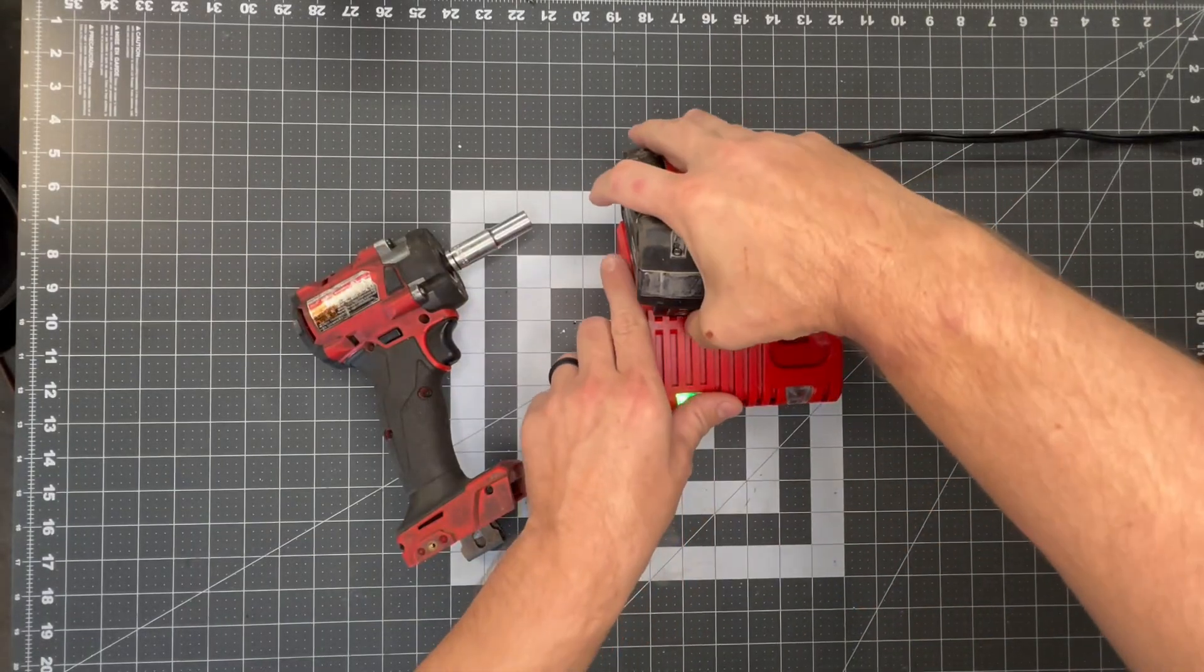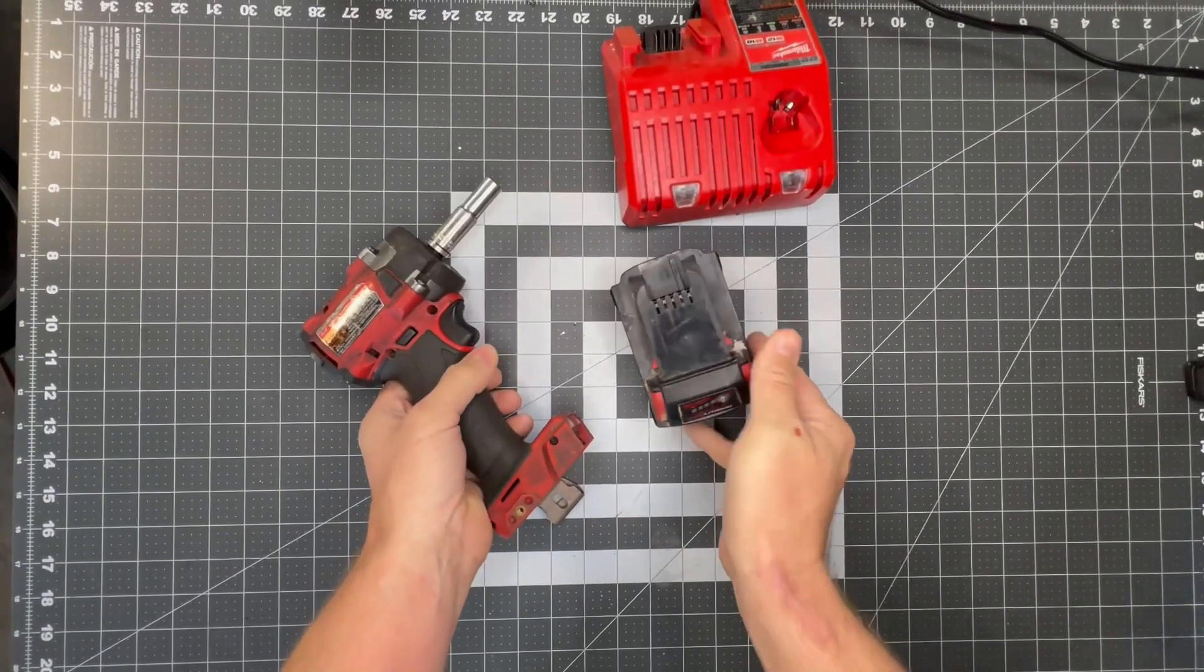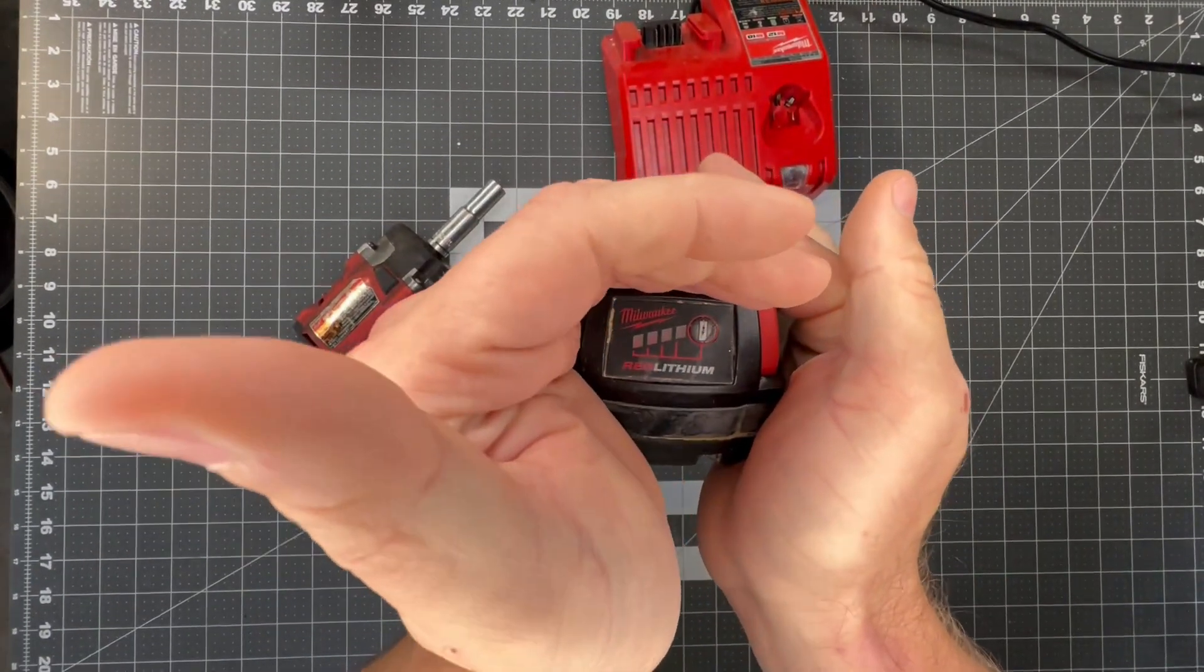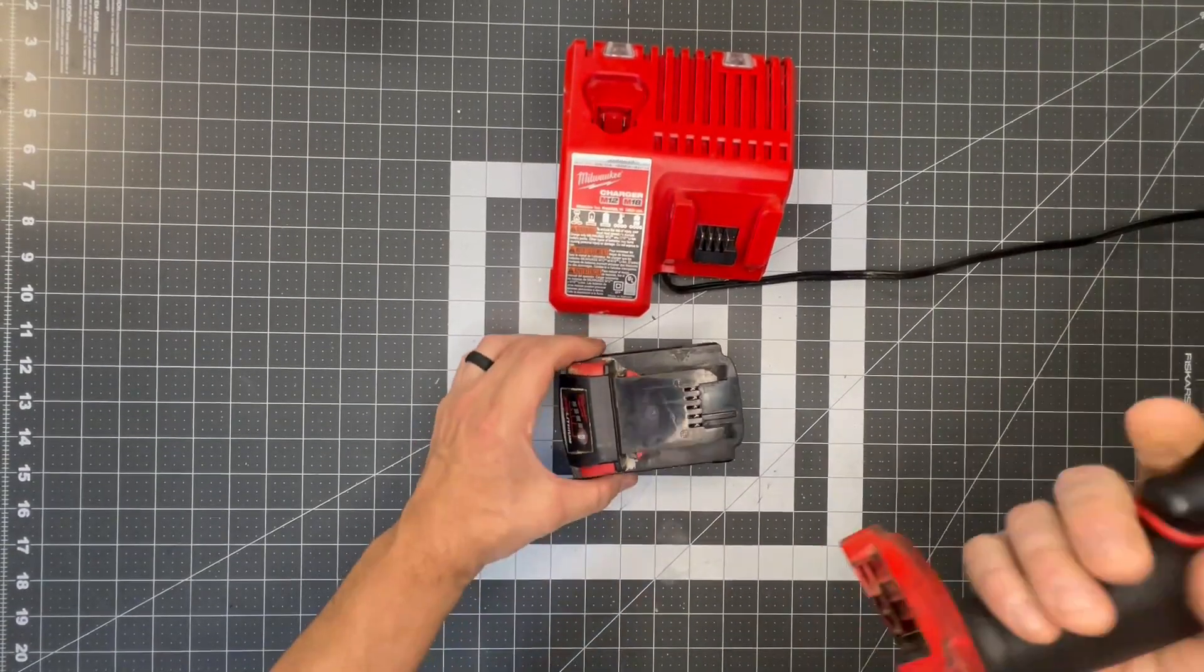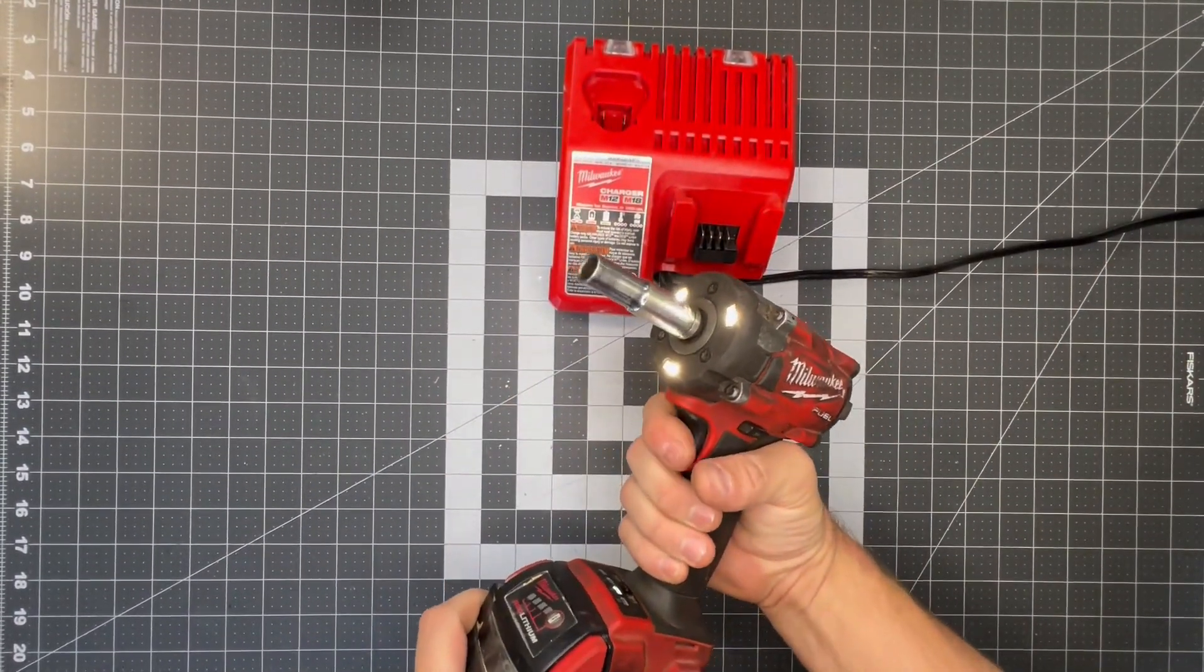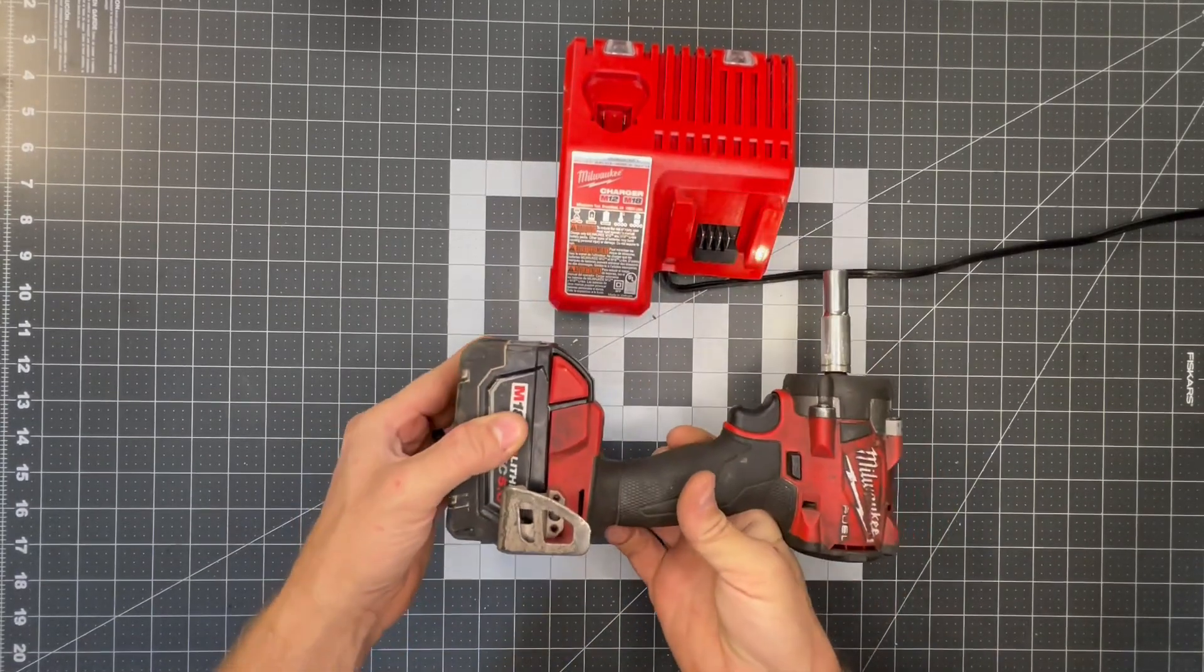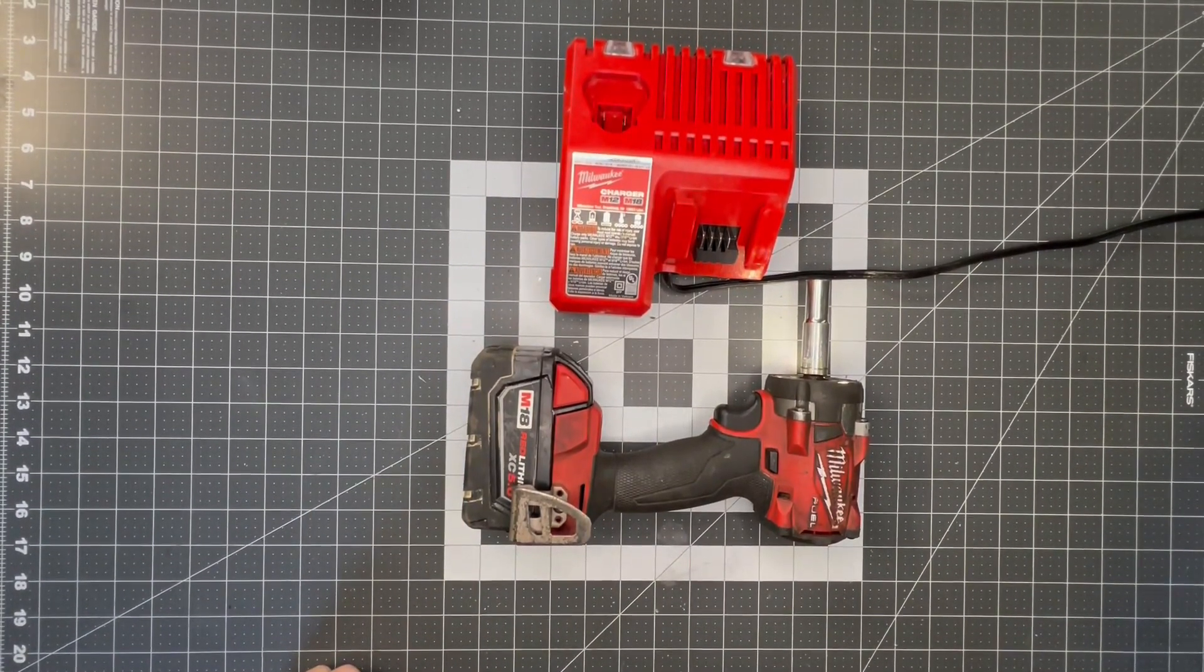And as expected, we've got a fully charged battery once again. Just go ahead and check the indicator lights. You can see the moment of truth. And that's how you replace the board on your M18 batteries. Thank you for watching.